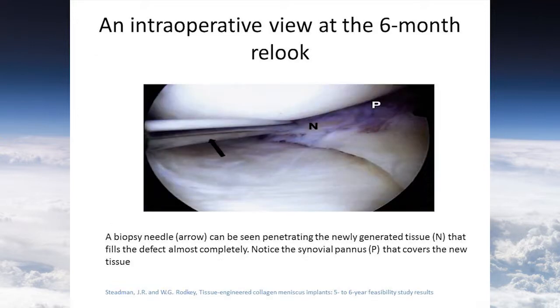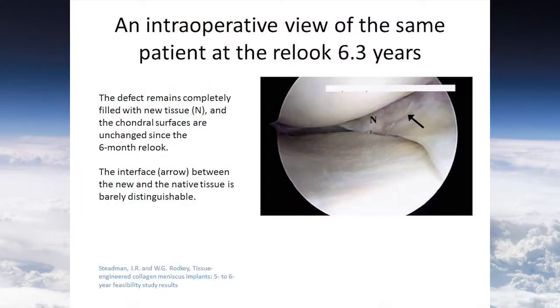After six months under arthroscopy, we can see that the newly generated tissue has filled the defects almost completely, and there are also blood vessels called synovial pannus that cover the new tissue, providing blood supply. For the same patients, after 6.3 years, we can see that the defects remain completely filled with new tissue, and the cartilage surfaces are unchanged since the six-month look. The interface between the native tissue and the new generated meniscus tissue is very distinguishable.